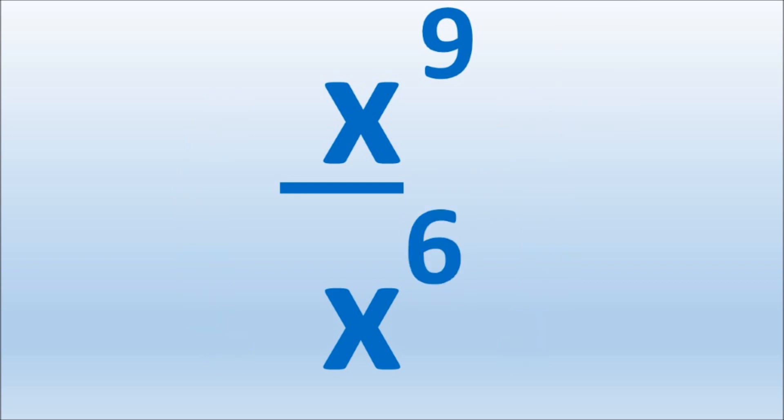We can evaluate this problem further by moving the sixth exponent beside the ninth exponent and subtract. 9 minus 6 gives us 3. So the final answer is x to the third.